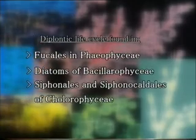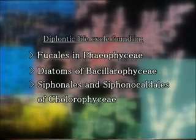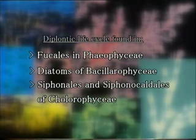The second type of monogenetic life cycle is the diplontic life cycle. The diplontic life cycle occurs predominantly in members of Fucales in Phaeophyceae, diatoms of Bacillariophyceae, Siphonales and Siphonocladales of Chlorophyceae.